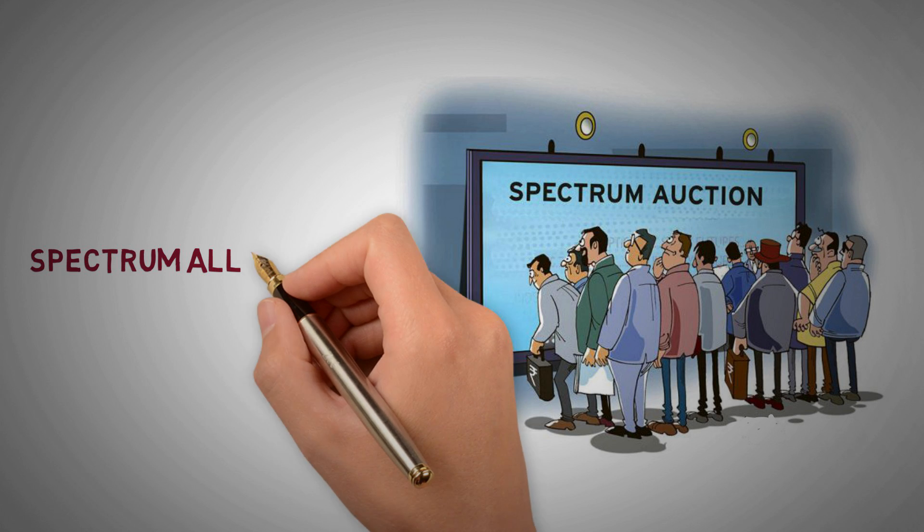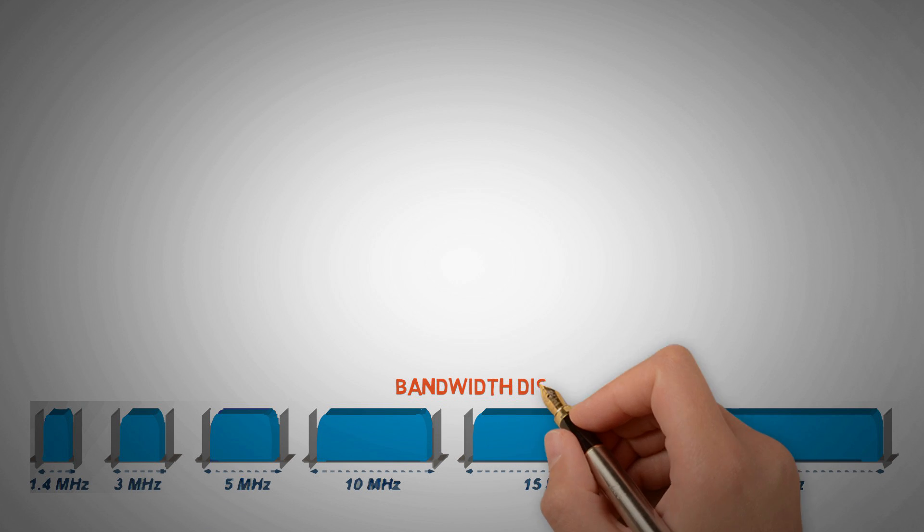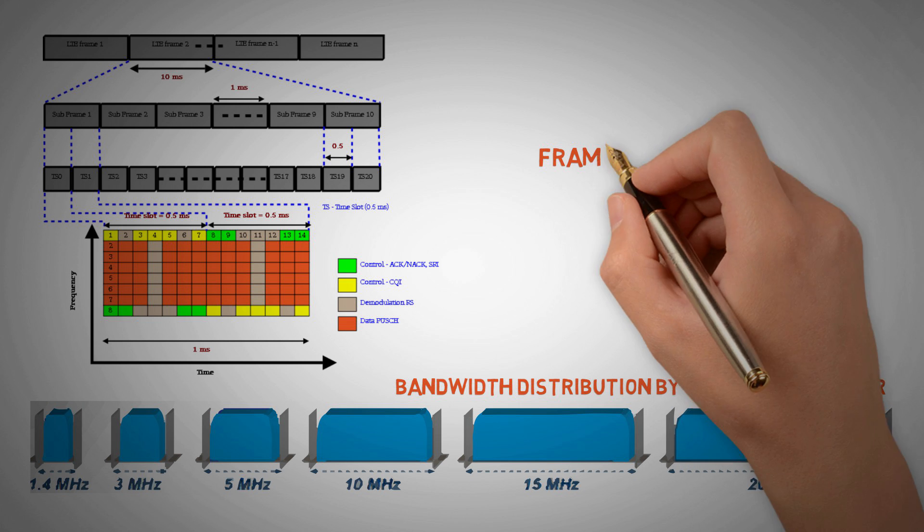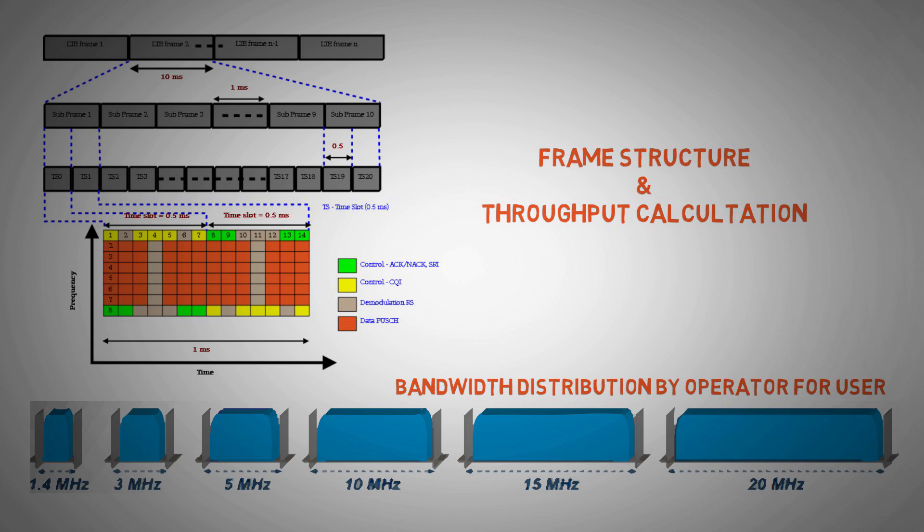We will also discuss how spectrums are allocated to telecom operators and how operators distribute the bandwidth among the users. We will show you how frames are structured and how throughput is calculated in different radio conditions.